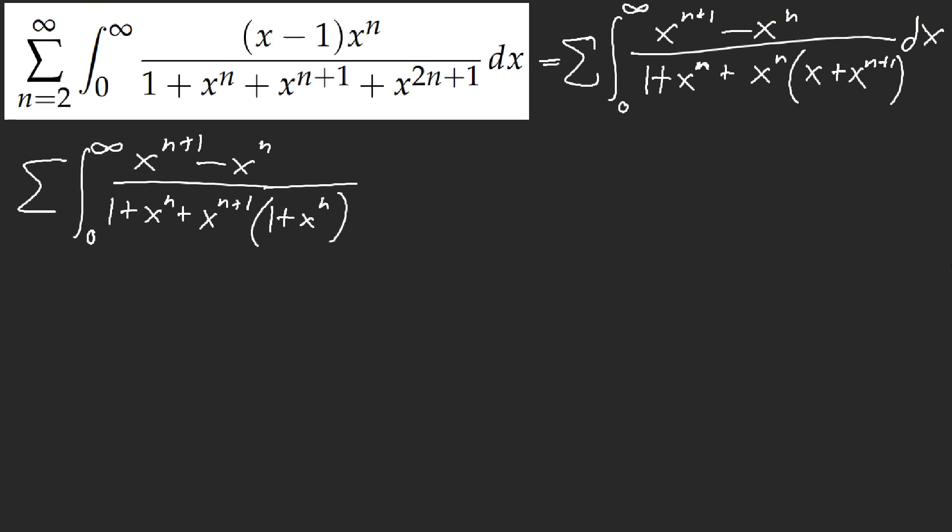This is 1 + x^n + x^(n+1) of (1 + x^n). Ah, 1 + x^n here, 1 + x^n here. We can factor. Okay, and I think I kind of see where this is going. 1 + x^(n+1). Look at this. If you remember our training with zero substitution...